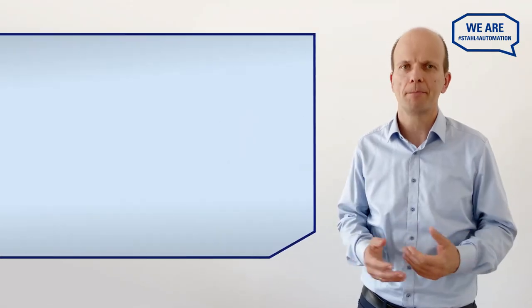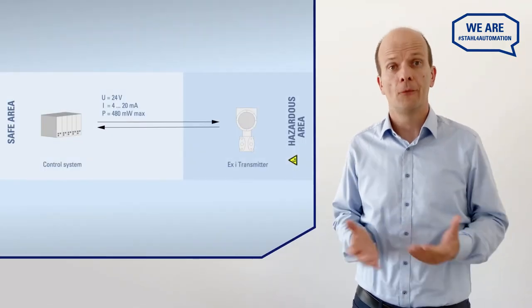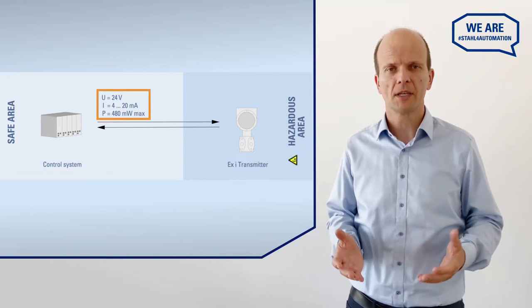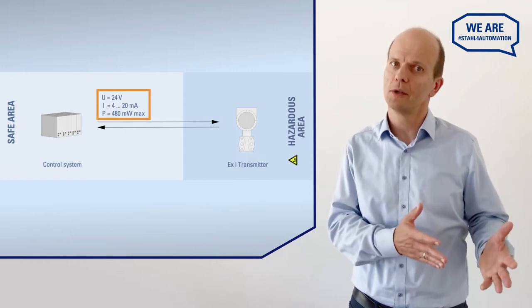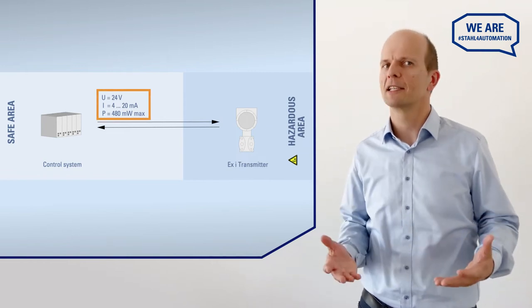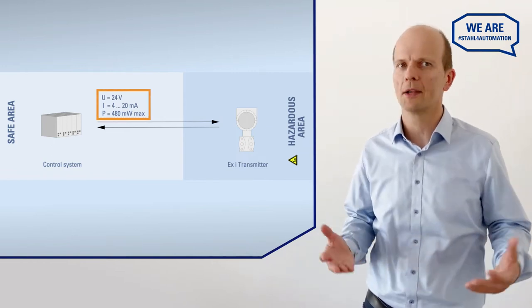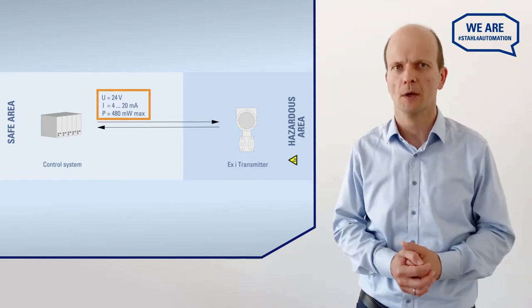Typically, the output voltage, the current, and power are all within the limits of intrinsic safety. For example, a 4 to 20 mA signal at 24 V with a maximum power of 480 mW.